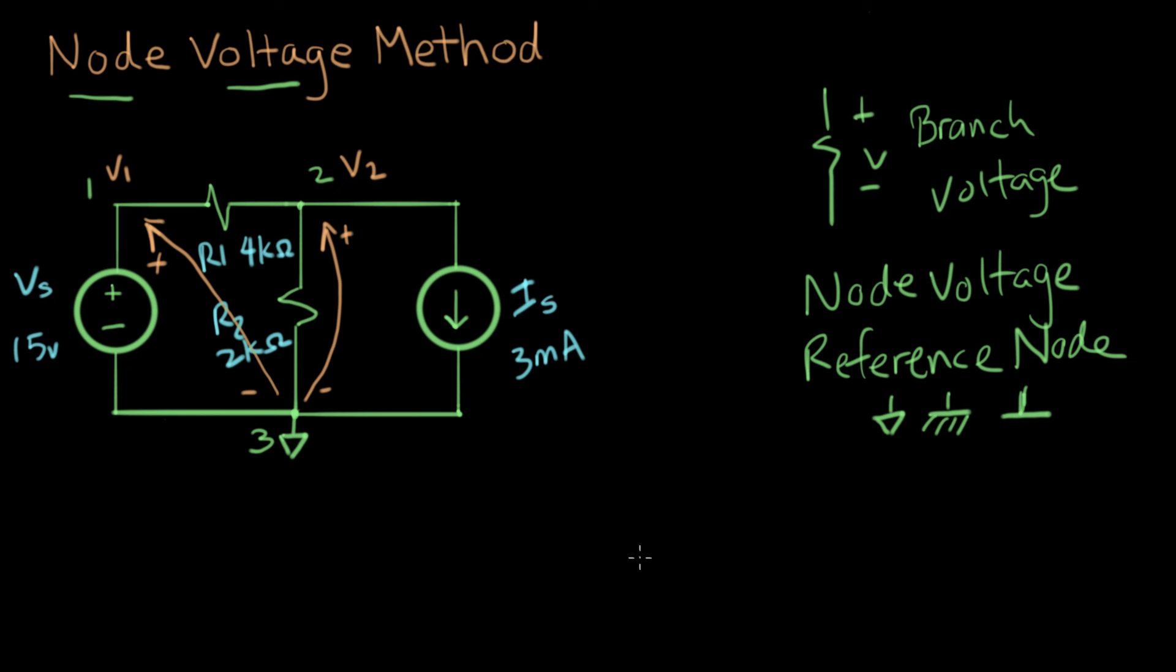What I want to do first is just write down what are the steps of this method. This method, it's not a theory, it's a method. So it's basically a sequence of steps that you go through to analyze the circuit. And I'll write the list right here. First step is pick a reference node. And we already did that.